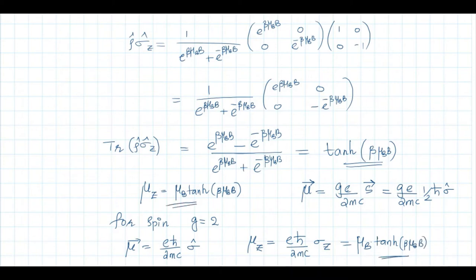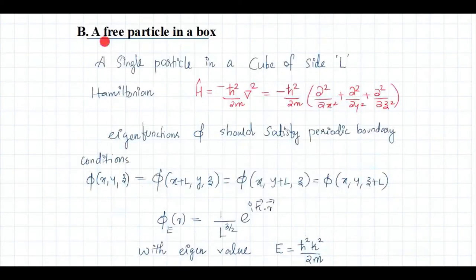This is the advantage of using the density matrix for finding observable quantities in statistical mechanics. Now we will consider the second example: a free particle in a box.